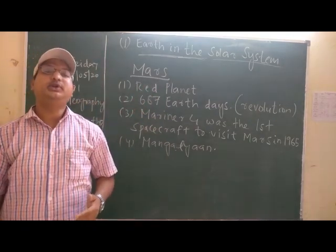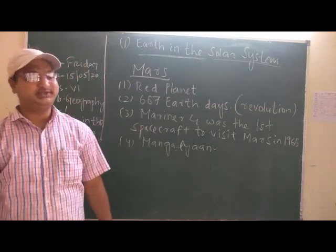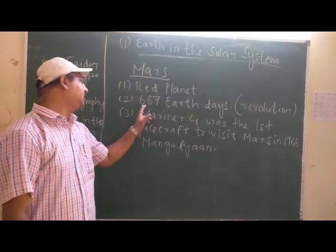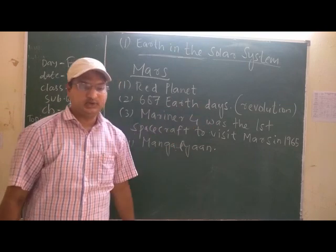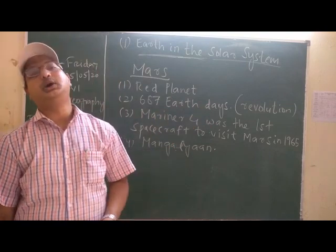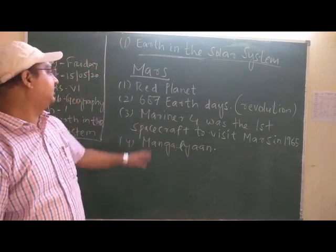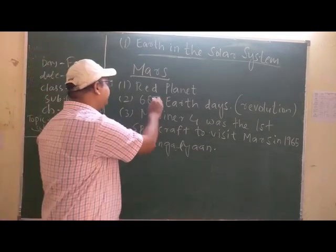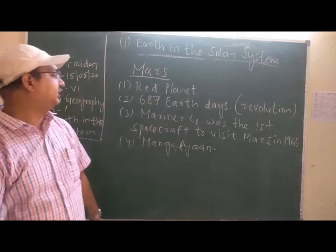In Hindi, we say Mars as 'Mangal.' You have heard from your ancestors or friends that it is called Mangal. Mars takes 687 Earth days — Earth days because Earth takes 24 hours for one day — so Mars takes 687 Earth days to complete one revolution, meaning to revolve around the sun.